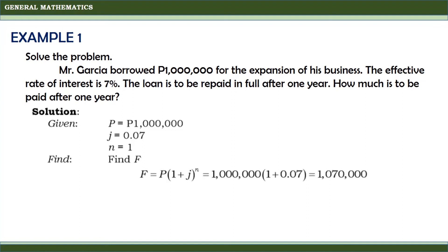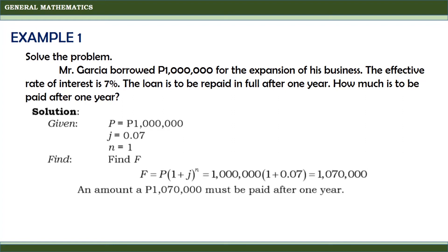By substitution, we will have 1,000,000 times (1 + 0.07). Keying this on our calculator, we will get the answer 1,070,000. Therefore, the amount to be paid by Mr. Garcia after one year is 1,070,000 pesos.